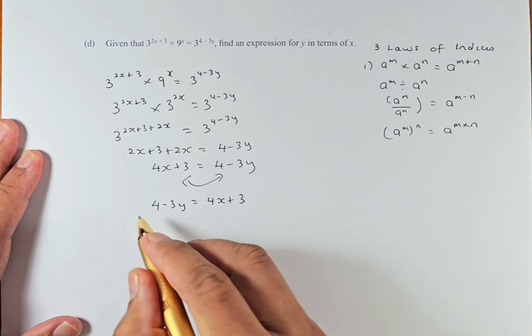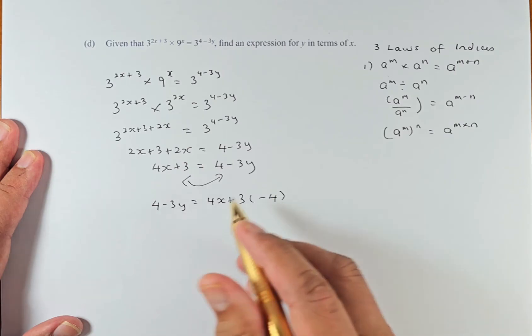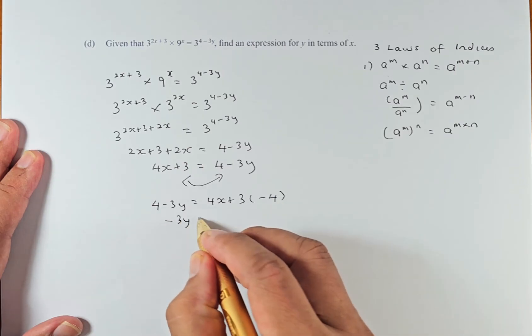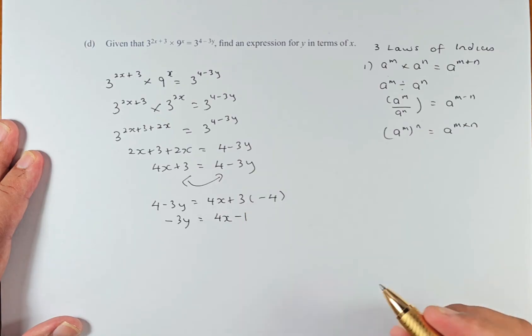Now the next step, we get rid of the 4. We're going to minus 4 on both sides. So 4 will be deleted. So -3y equals 4x minus 1, because 3 minus 4 is minus 1.